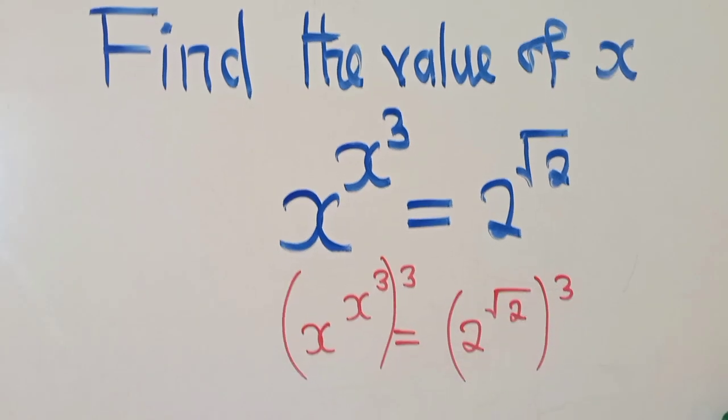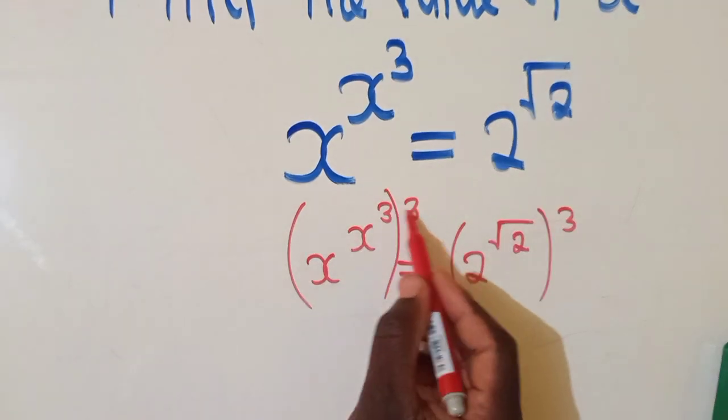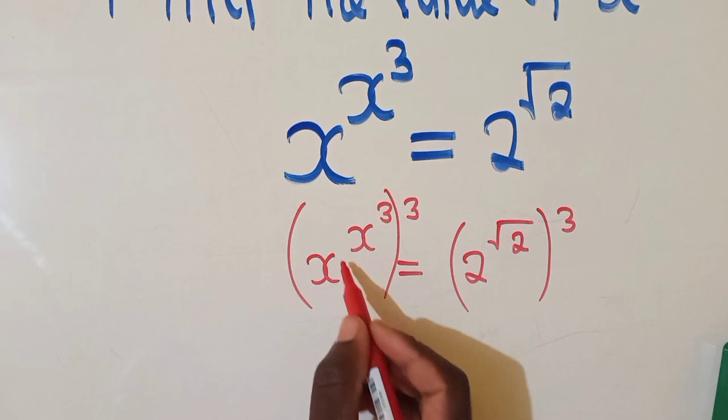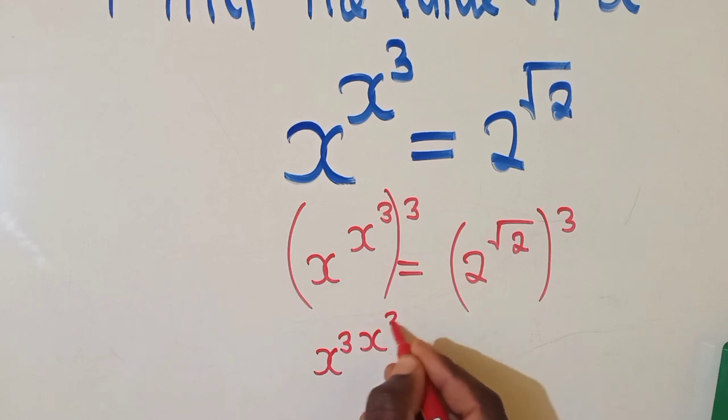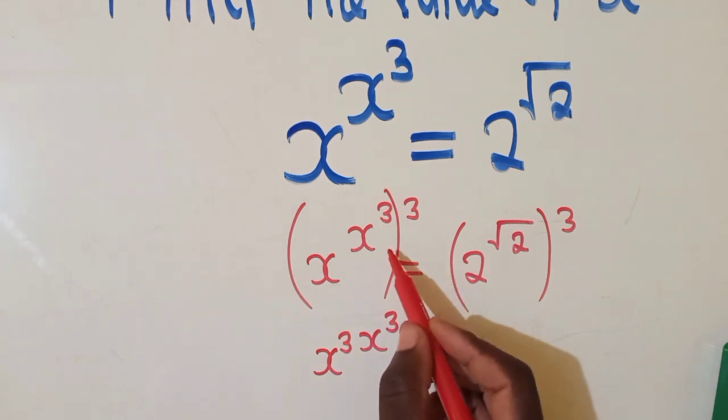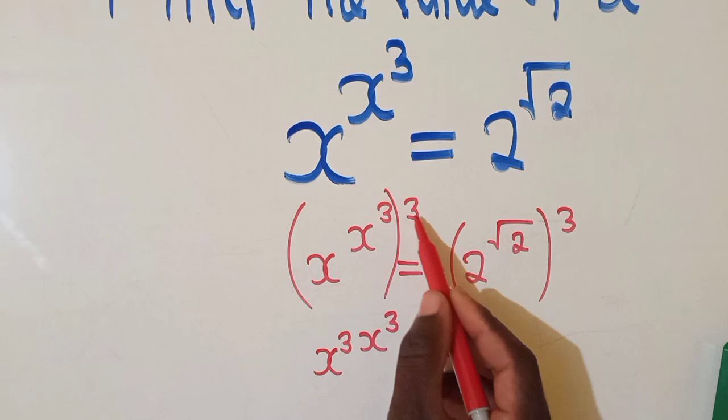And that's what we have. So this power 3 will come right here, so it will be x power 3 x power 3. Good. We have now the same thing here, here, and here.